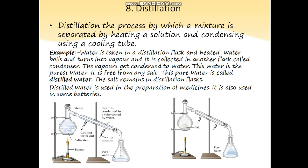As you can see in these pictures, water is taken in a distillation flask and heated. The water boils and turns into vapor, which is then collected in another flask called a condenser. The vapor condenses back to water, and this water is the purest form — free from any salt. This pure water is called distilled water and is used in the preparation of medicines. That is how important the separation of substances from impurities is.